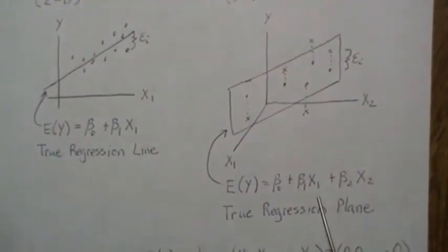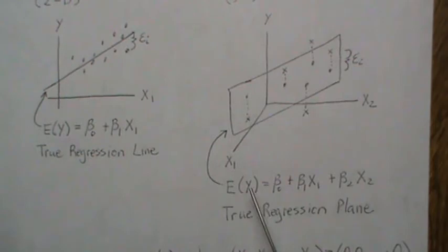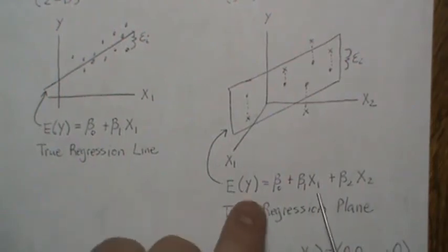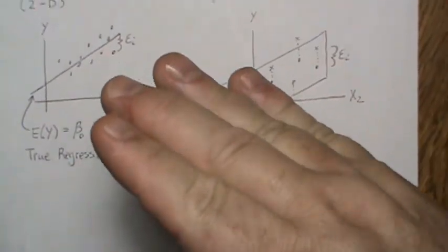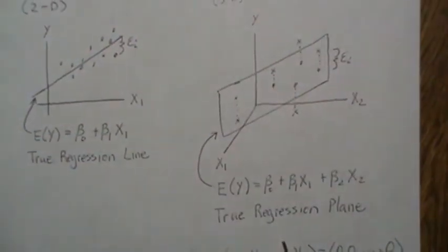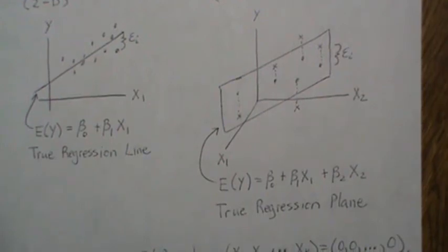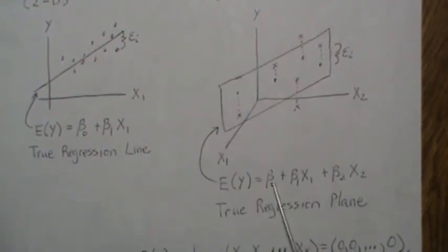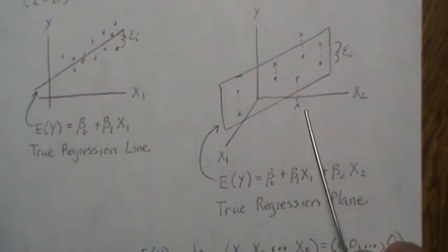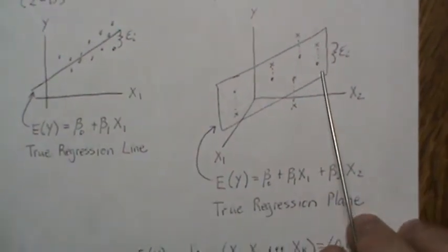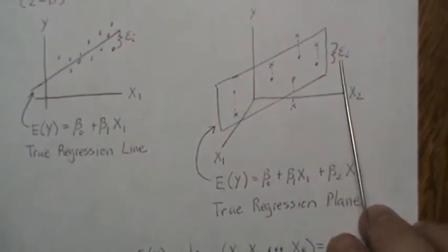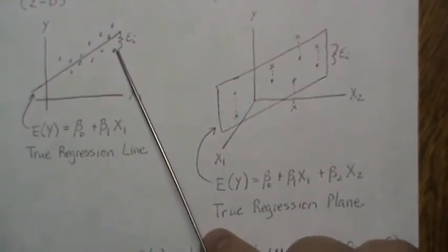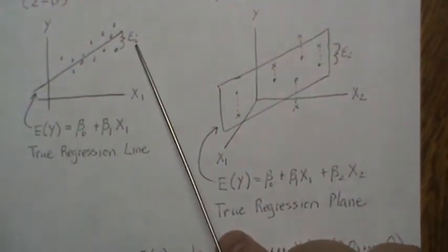Now here we're using two predictors to predict y. And the shape of this right here is a plane. So it's a flat surface that goes through three-dimensional space. That's what this is. And then the data fluctuate around that plane. So some may be below it, some may be above it, some really close. That distance away from the plane is what we're calling epsilon, as the distance away from the line is what we call epsilon.